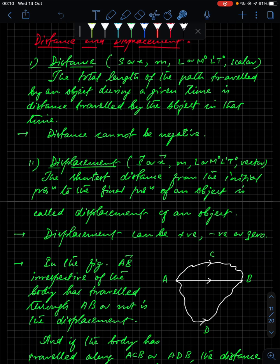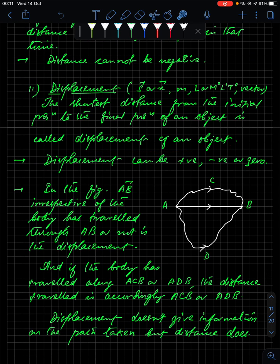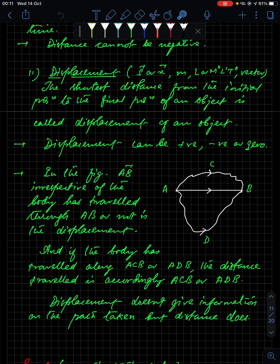Displacement is denoted with the same character s or x but with a vector sign — this must be noted for every vector quantity. The SI unit is meter and the dimension is L, same as distance, but it is a vector quantity. Displacement is defined as the shortest distance from the initial position to the final position of an object. It can be positive, negative, or zero.